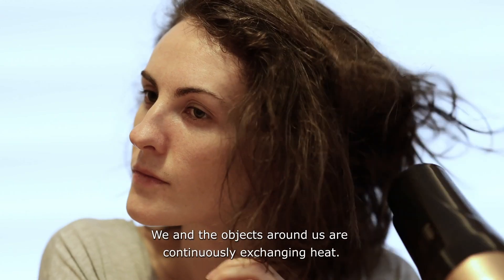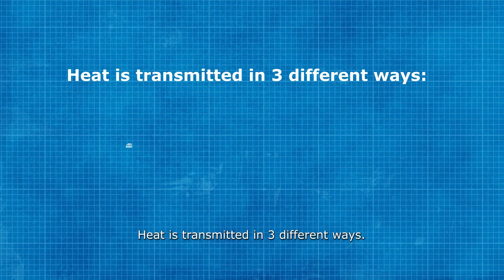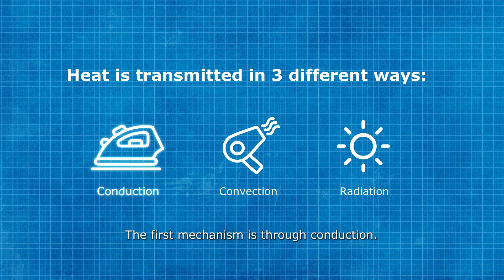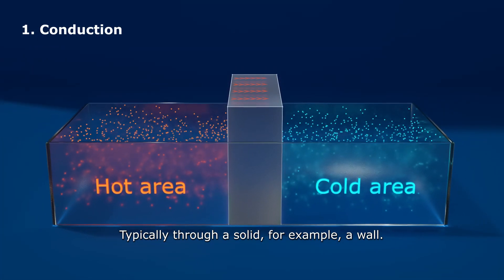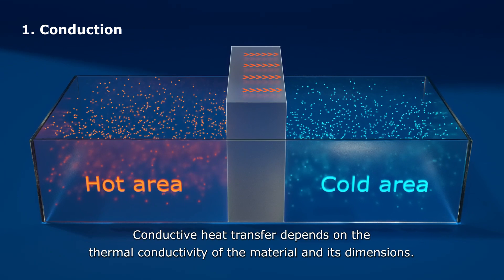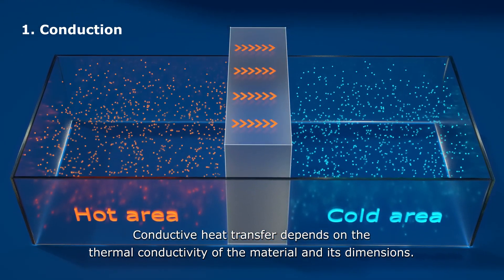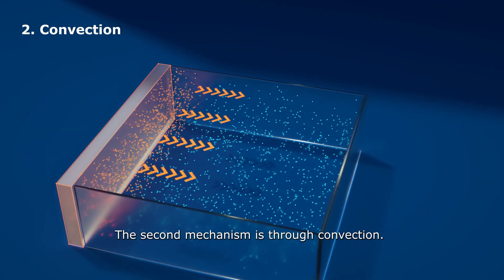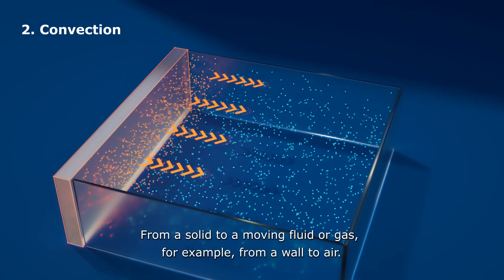We and the objects around us are continuously exchanging heat. Heat is transmitted in three different ways. The first mechanism is through conduction, typically through a solid — for example, a wall. Conductive heat transfer depends on the thermal conductivity of the material and its dimensions.